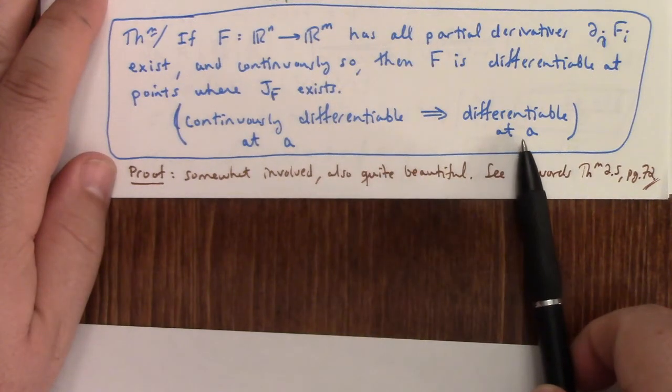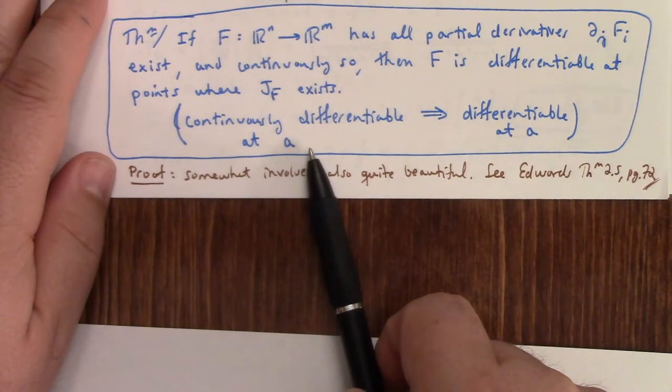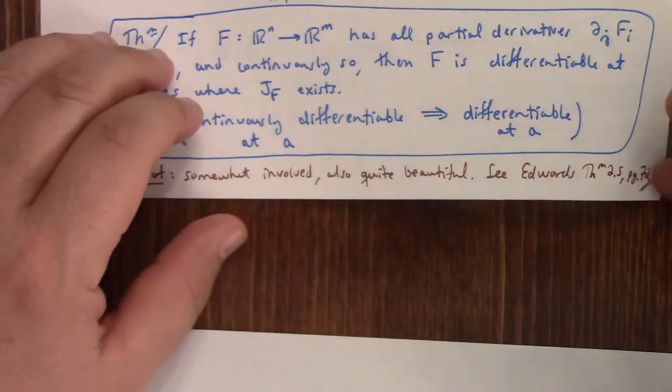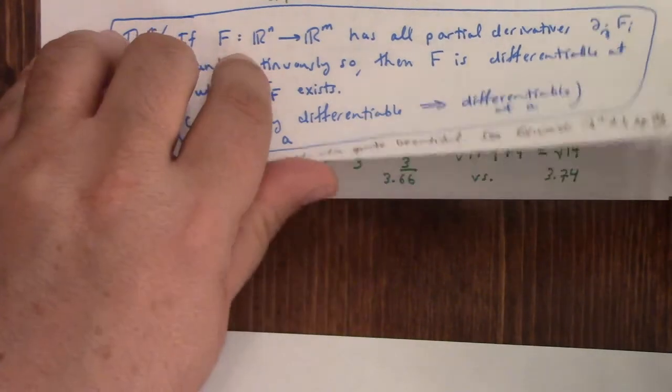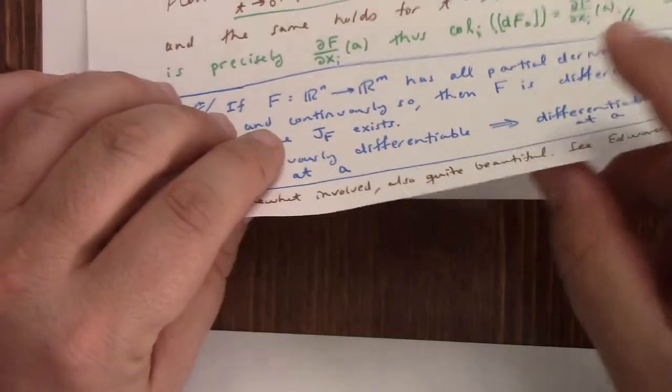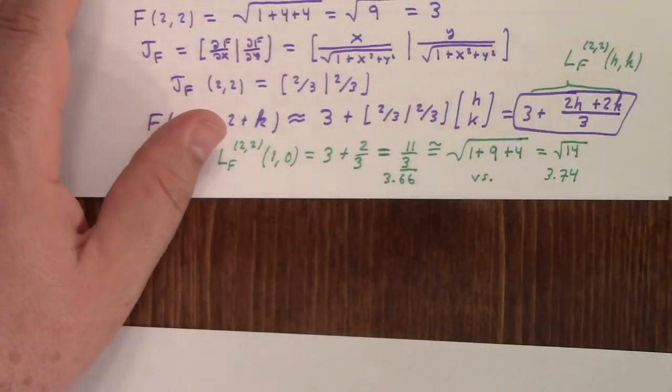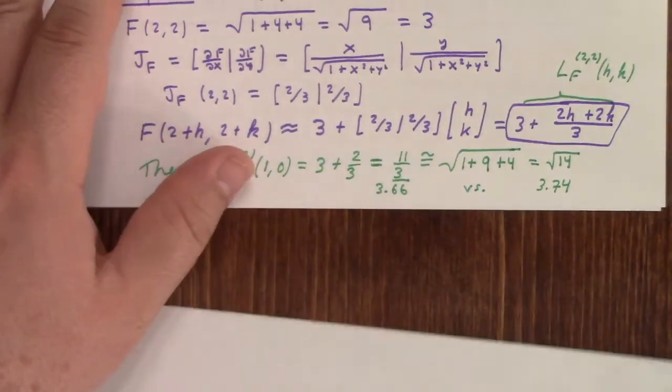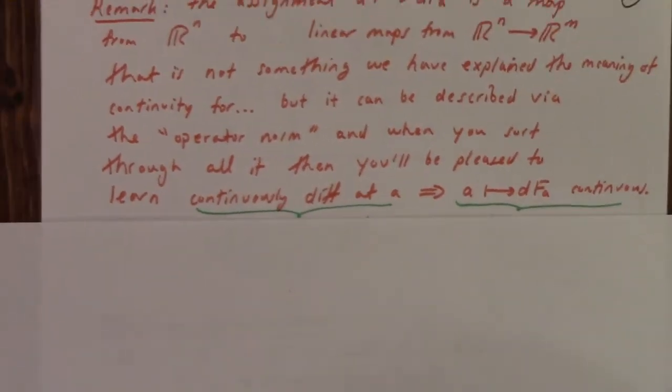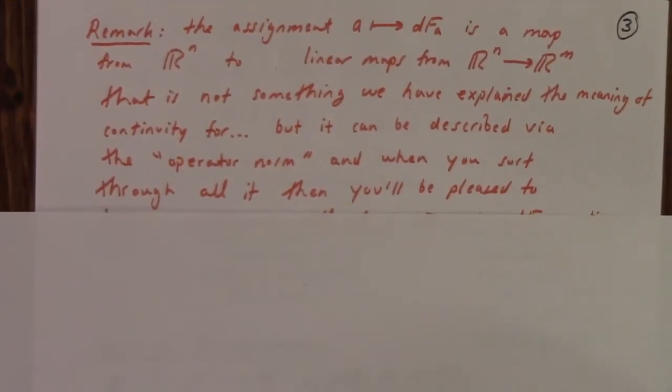Continuous differentiability is a statement about the continuity of partial derivatives of the function. Differentiability is a statement about that multivariate limit. So continuous differentiability rests on component derivatives, whereas this is everything together. Proof is in Edwards. It is somewhat involved. You can see page 72 if you want to look at it. I have proved that in previous years of my Map 332 course. If you really want me to, if you want to see me do it, I can try to find it. It's there somewhere on the YouTube.